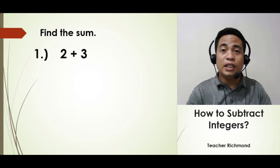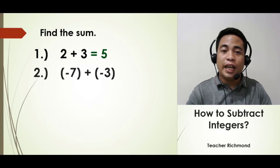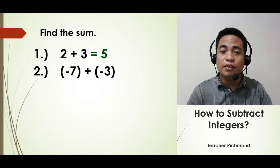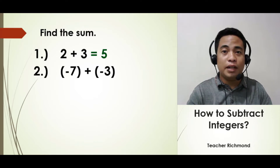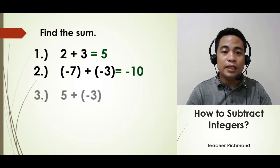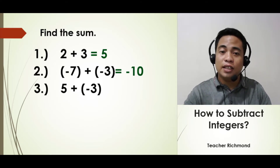So let's have a short activity. Positive 2 plus positive 3 is equal to positive 5. And negative 7 plus negative 3 — they have the same sign, which is negative, so you just add their absolute values and copy the common sign. Therefore our answer is negative 10.